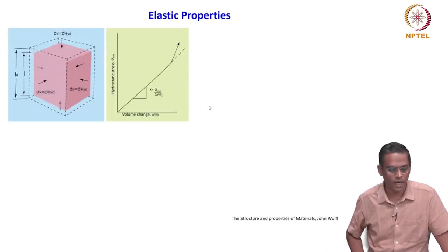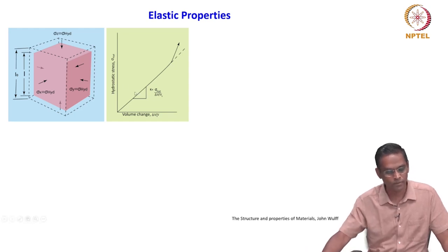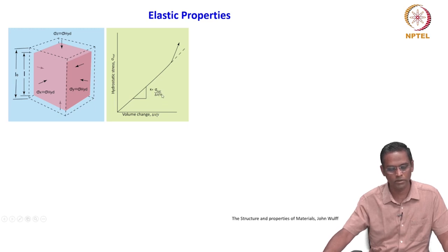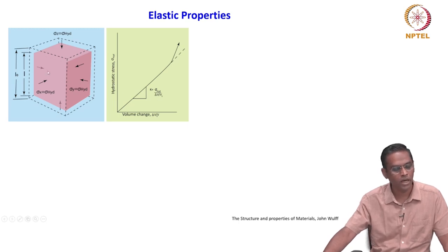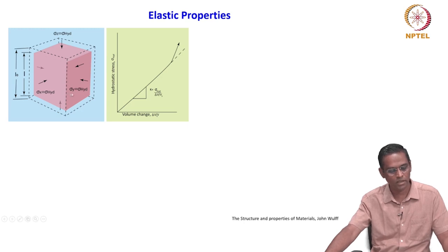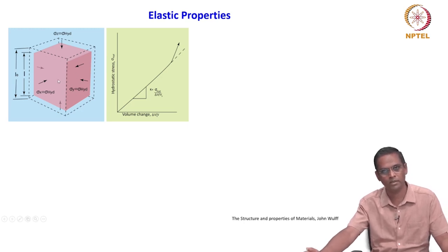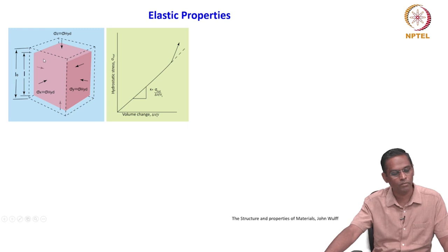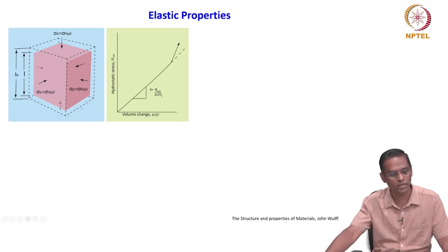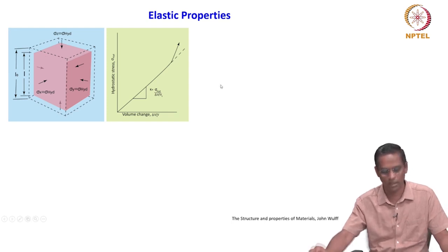Finally, this is hydrostatic stress versus volume change. The slope is K is equal to sigma hydrostatic divided by the fraction of volume change. The stress is equally applied from all over — here it is a compression. The initial dimension L naught becomes L, the final dimension, so it is not in one direction; all other directions are also getting compressed. It is hydrostatic compression.